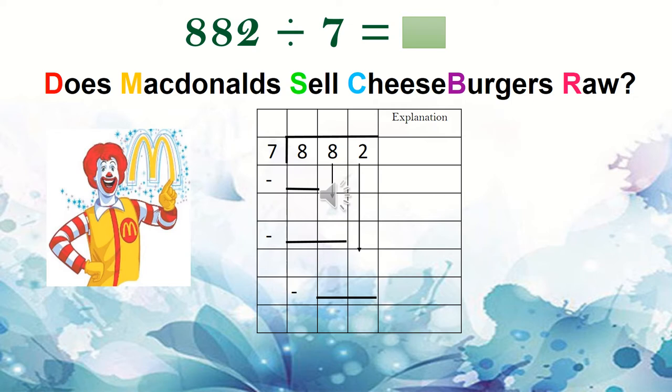Let us begin. 882 divided by 7. We want to solve this sum by long division using the memory technique. Does McDonald's sell cheeseburgers raw? Boys and girls, it is important for you to note how to set up your work. You don't have to set up the whole sum as I have, but you need to ensure that your divisor is before your dividend. Your divisor is 7. You draw a line between them and you draw a line on top of your dividend which is 882. Your answer goes above the line of your dividend.